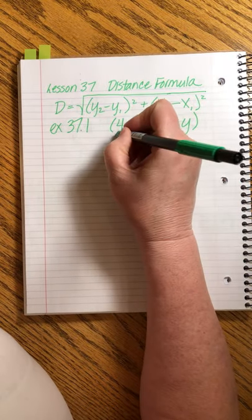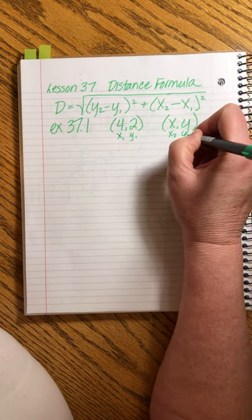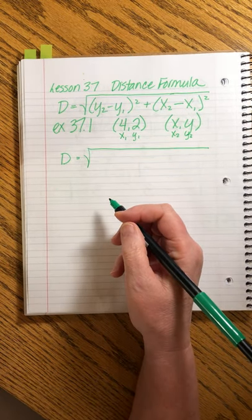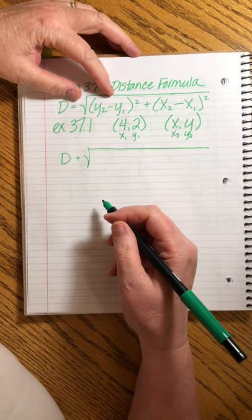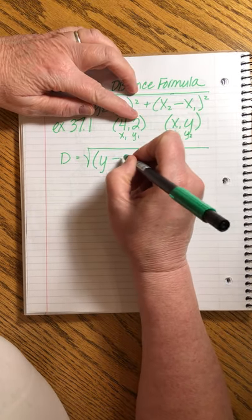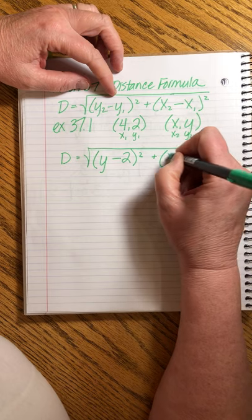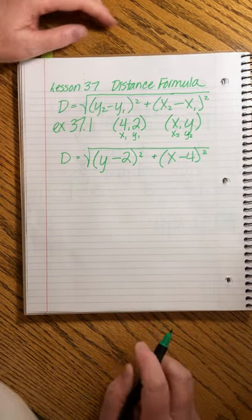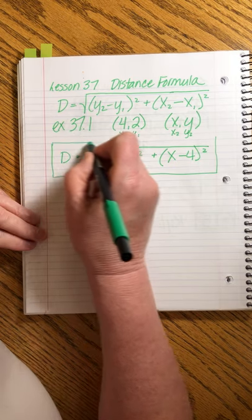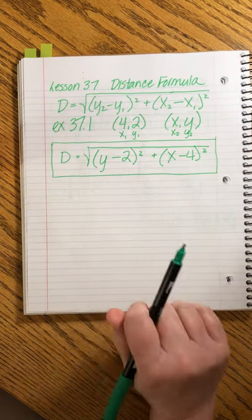So what we do is we simply say, okay, let's call these the ones - x₁, y₁, and we'll call these the twos - x₂, y₂, and we'll simply set it up like this. We know we're not going to get a number, so we'll say this will be y minus 2 squared, plus x minus 4 squared. And that would be the formula that you could use to calculate the distance from your house at position (4,2) to every other house in the neighborhood. This is example 37.1, just reminding you of how the distance formula works.